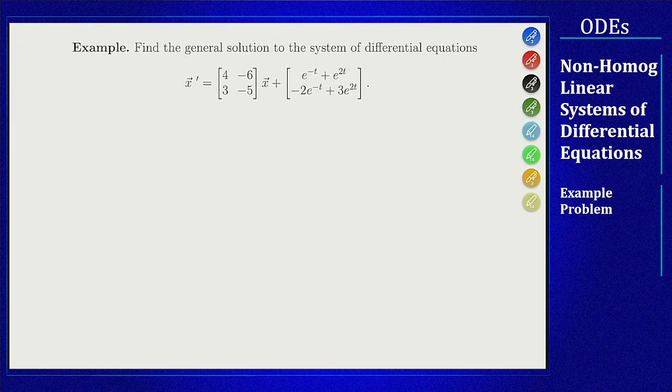In this example, we wanted to take a non-homogeneous linear system of differential equations and solve it using all three methods: diagonalization, undetermined coefficients, and variation of parameters.